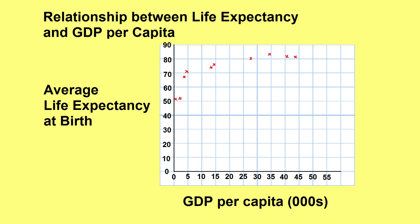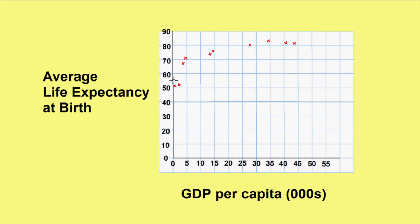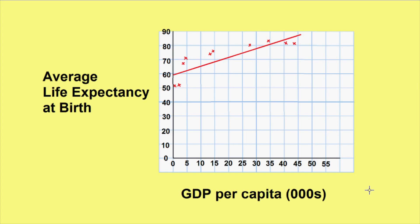When the graph is completed we want to see if there is any relationship between the data. Providing there is a recognizable pattern, draw a trendline through the graph — this is also known as a line of best fit. The steeper the slope of the trendline, the stronger the relationship is between the variables.